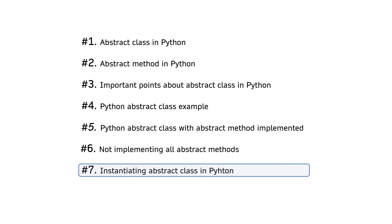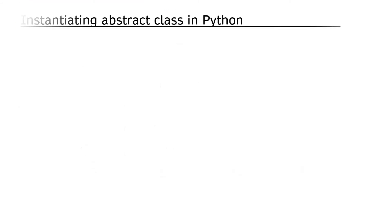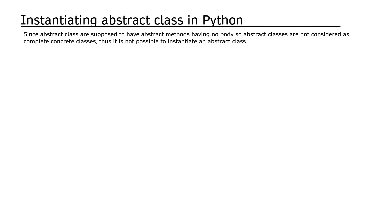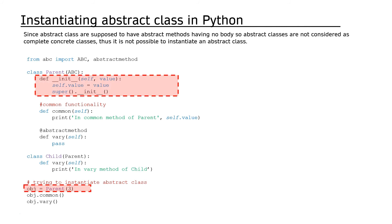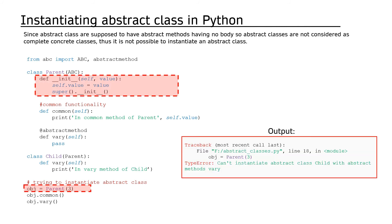Since abstract classes are supposed to have abstract methods having no body, abstract classes are not considered as complete concrete classes. Thus it is not possible to instantiate an abstract class.